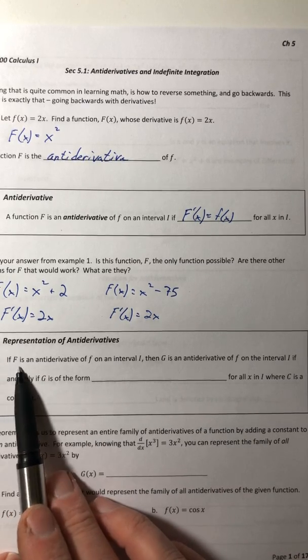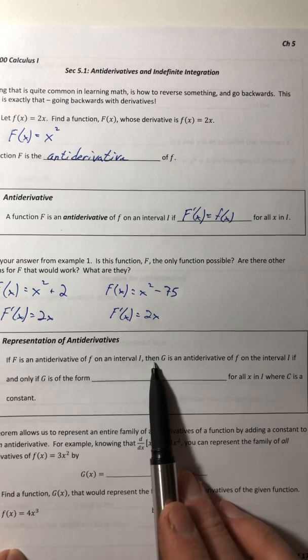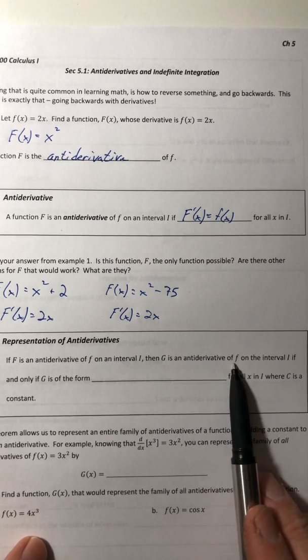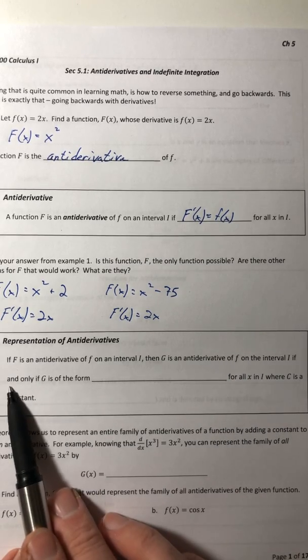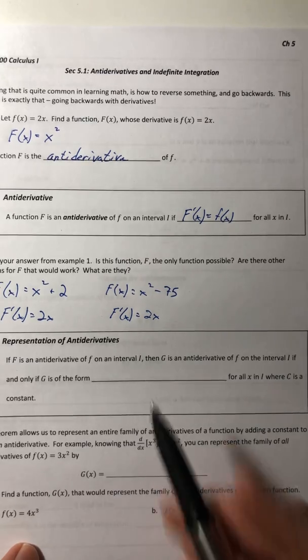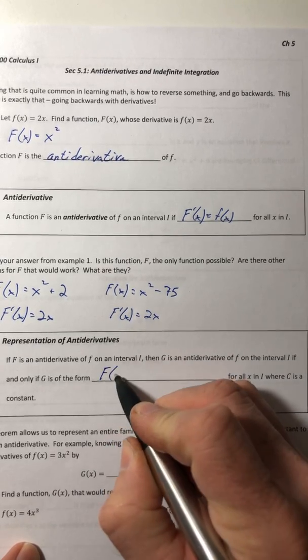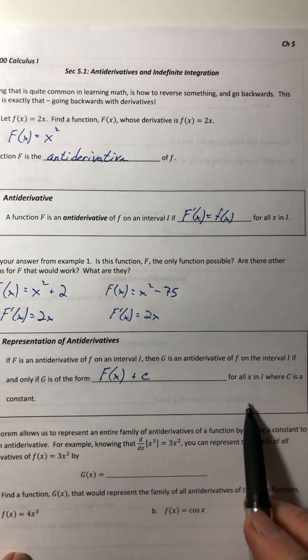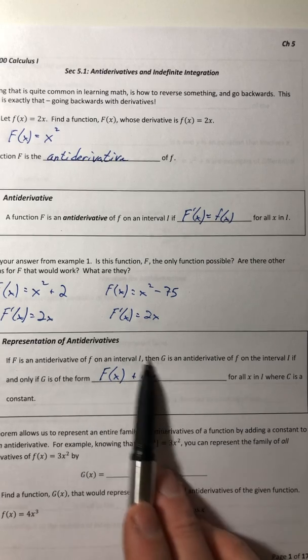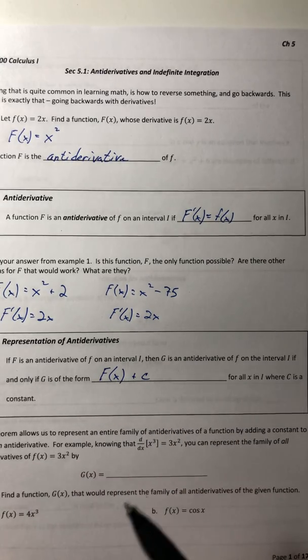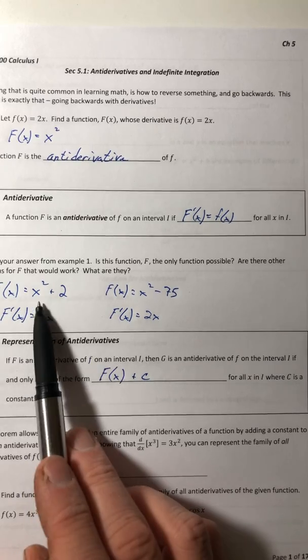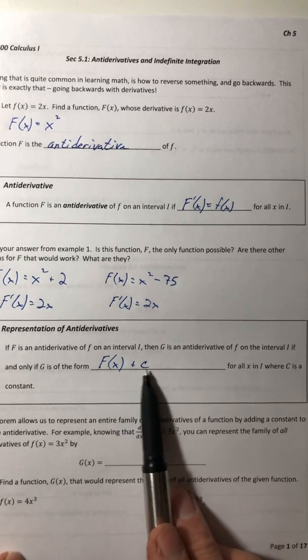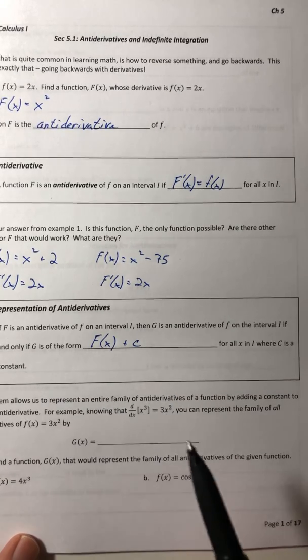So if capital F is an anti-derivative of little f on an interval i, then capital G is also an anti-derivative of little f on the interval i if and only if that g is of the form capital F of x plus c, where c is a constant. So this is what we're going to be using to represent the family of anti-derivatives. It accounts for having that extra constant at the end because you don't know what it is, so you just put this plus c in there.